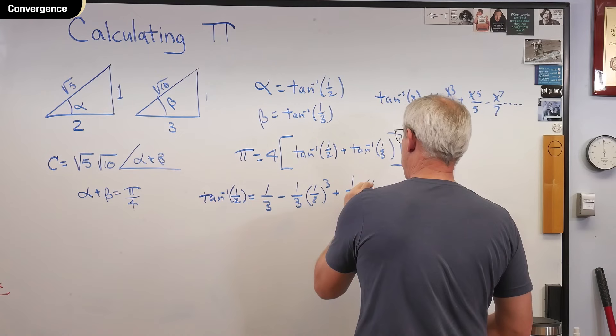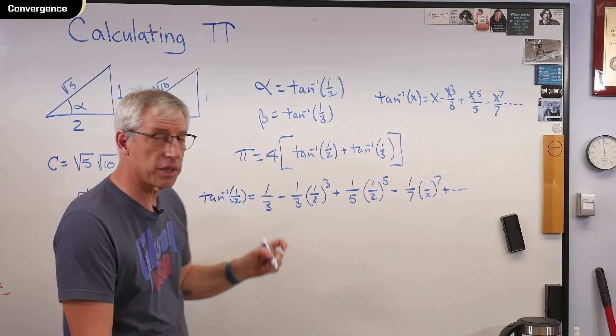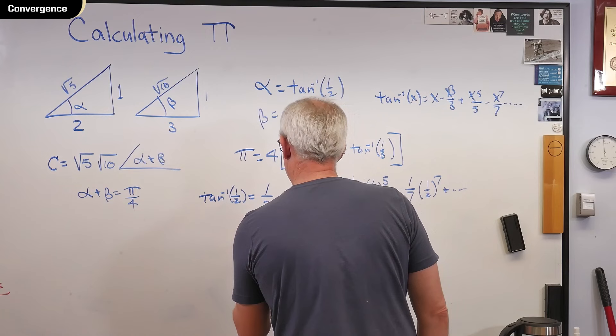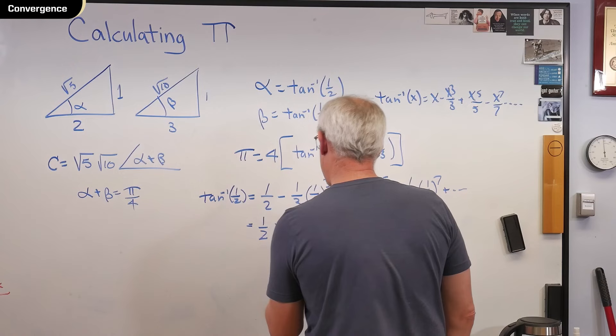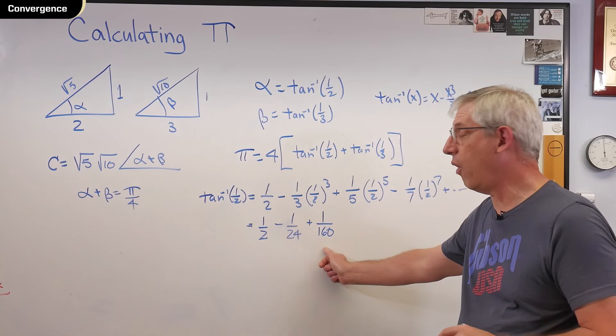So that's what that looks like. These numbers are going to get small pretty quickly. If you write these out, this is a half. So that's one-half minus one over 24. I'm looking at my computer over here to make sure I get the right answer. Plus one over 160. That's only three terms, and that term is already less than .01. So we're looking good here.